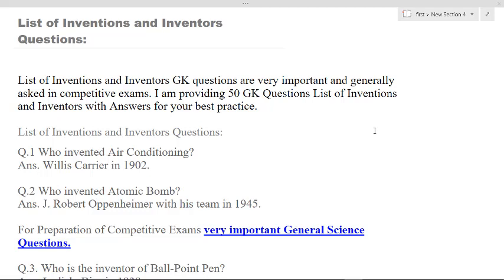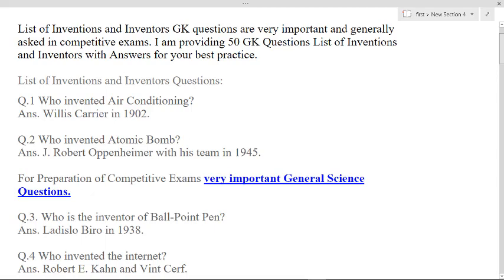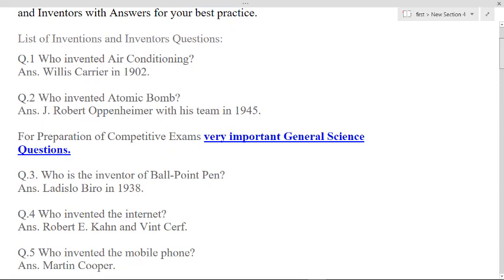The first one is who invented air conditioning? Willis Carrier in 1902. Who invented atomic bomb? J. Robert Oppenheimer with his team in 1945. And here are the questions which are generally already asked in competitive exams.